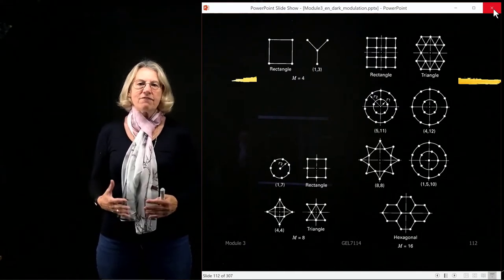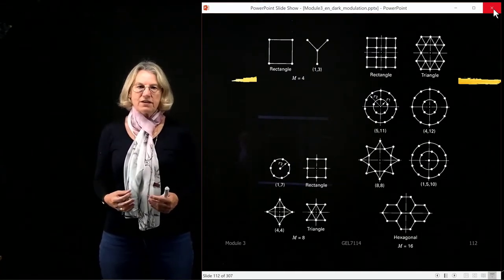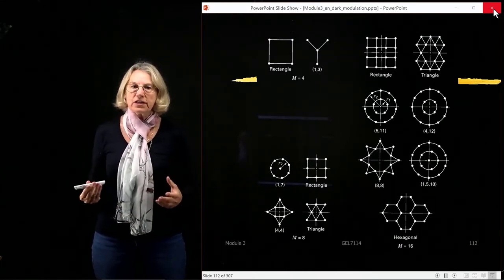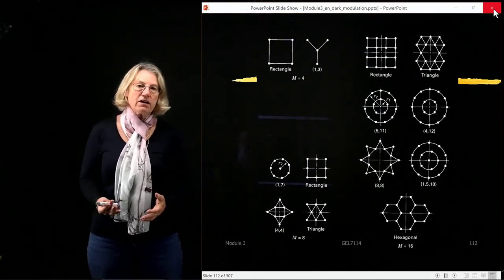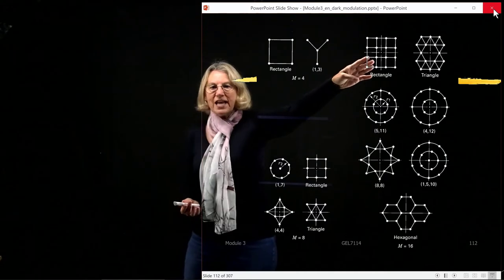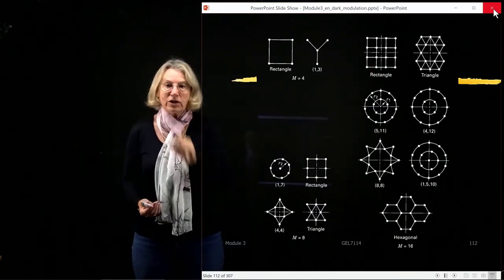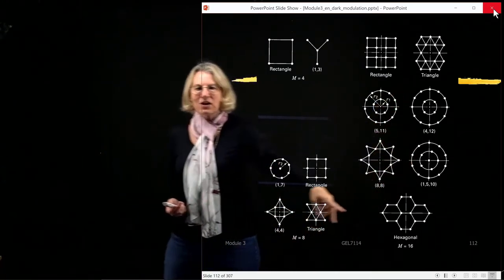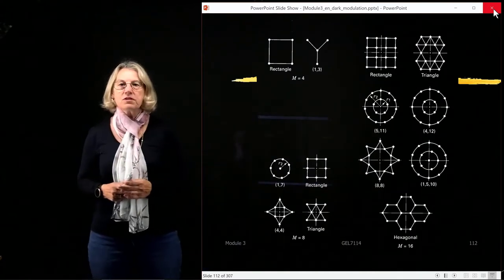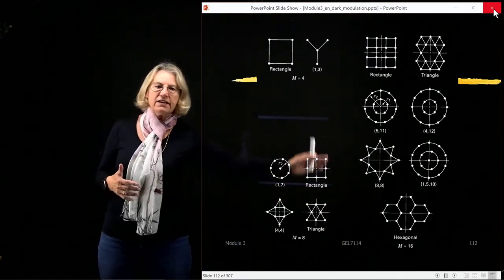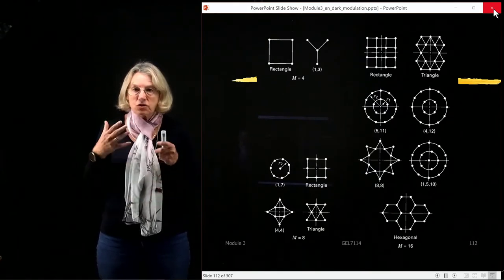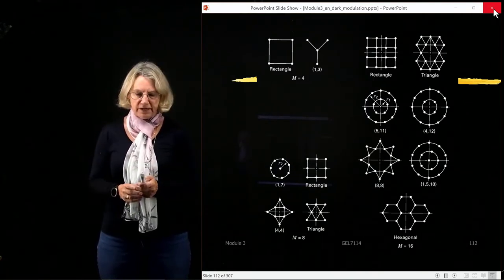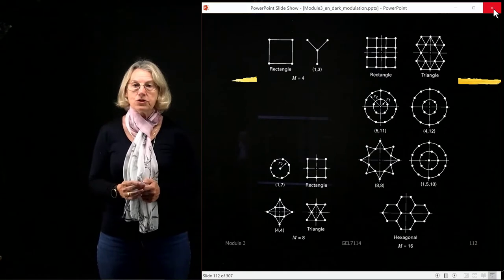QAM can have an amazing number of instantiations. There are all kinds of two-dimensional geometries that we can use for QAM modulation. What I'm going to be showing you today are solutions for the typical rectangular form. However, what you'll see on some exam questions is applying the same techniques to other geometries. The technique for rectangular QAM can be applied to any arbitrary form to find a good expression for the probability of error using the union bound.